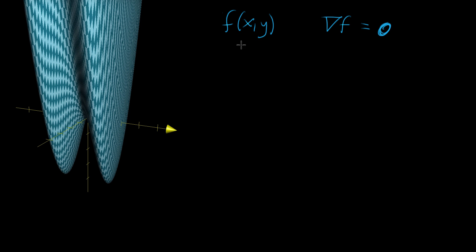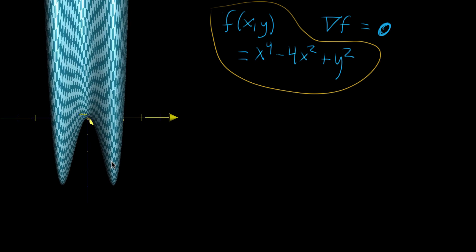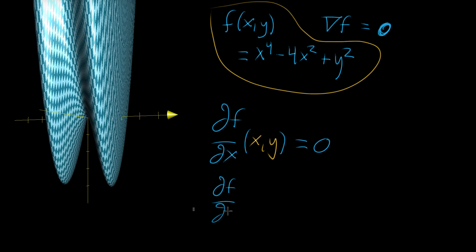The function we're looking at is f(x, y) = x⁴ − 4x² + y². In order to find where its tangent plane is flat, we're looking for where the gradient equals 0. This is just a way of unpacking the requirements that both partial derivatives are 0: the partial derivative of f with respect to x at some point (x, y) equals 0, and also the partial derivative of f with respect to y at that same point (x, y) equals 0. This gives us a system of equations we can solve for x and y.